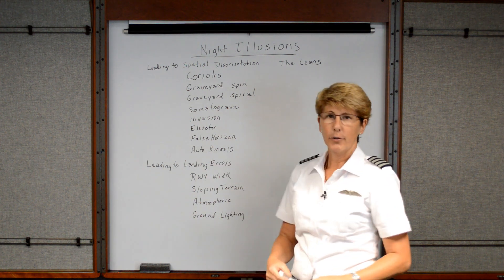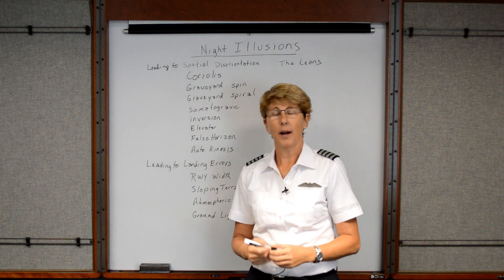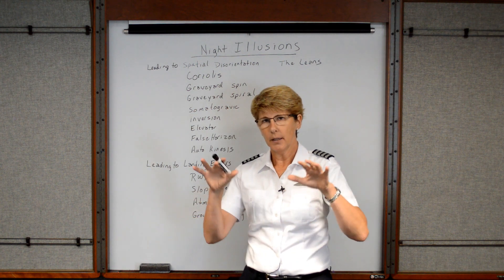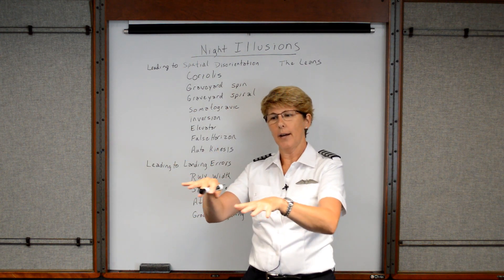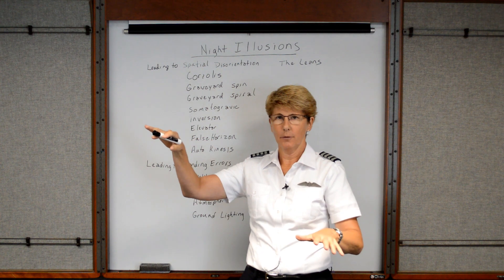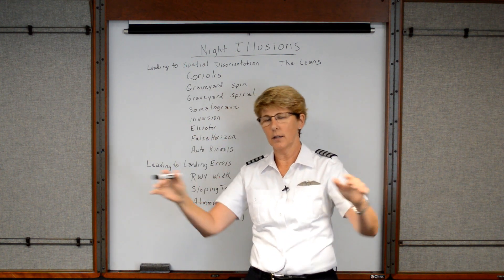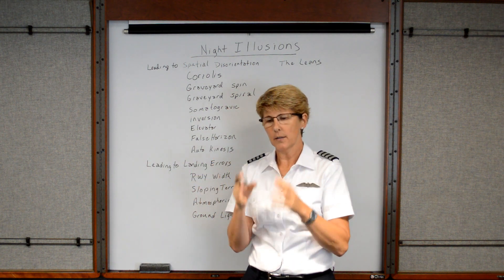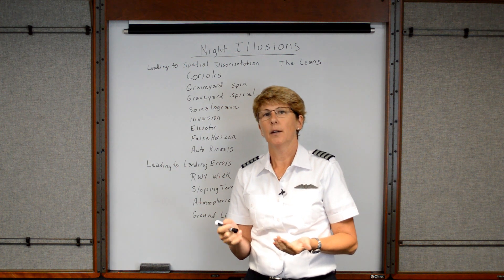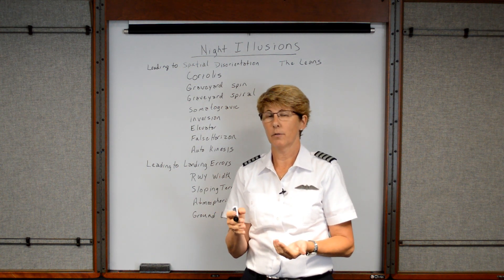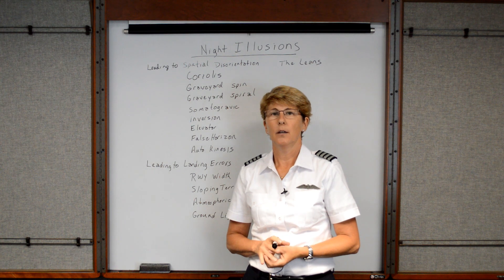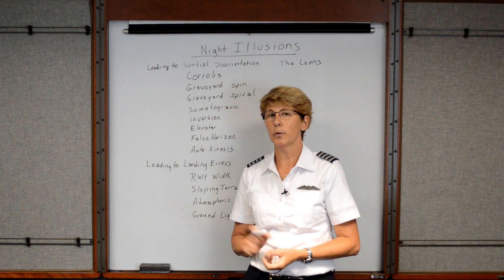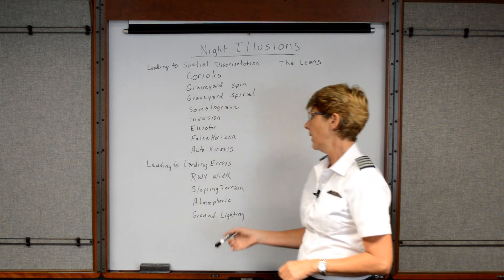Next is the false horizon — one the instructor has actually experienced, and it's not that uncommon. If you fly on a very dimly lit night and the lights on the ground happen to line up as if that's your horizon because you can't see the real horizon, you start thinking that might be the horizon. You have to really pay attention to your instruments inside the cockpit, because sometimes at night when it's very dark and you fly over a dimly lit area, it's as if you're flying in IMC — instrument meteorological conditions — and you have to really trust your instruments.